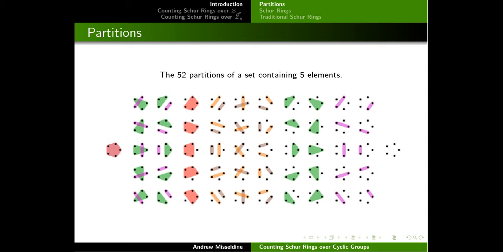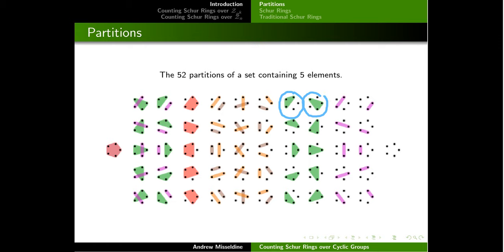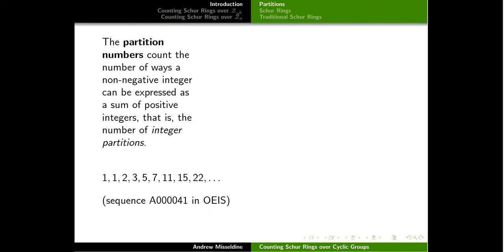It turns out there are going to be 52 ways one can partition that set. One option is you put everything together. You could have everything isolated — when you see no color on the dot that means it's a singleton — and you get things like putting three things together and leaving two apart. This gives us 52 possibilities for a five-element set.